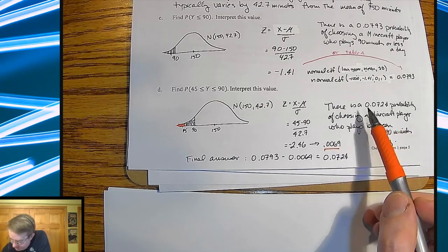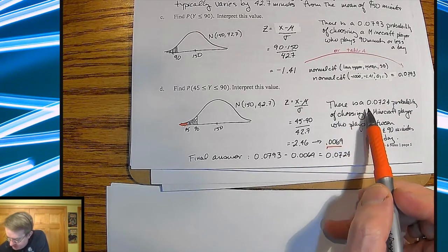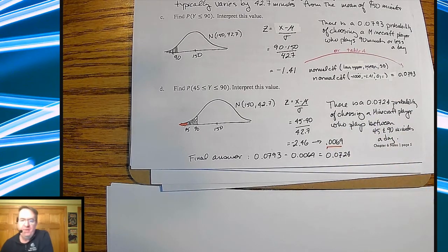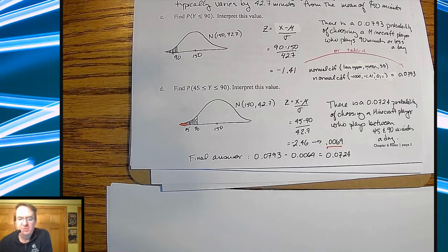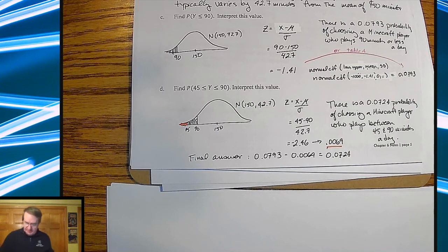So again, you've got, I mean I'm not going to say it's negligible, but the interpretation there is a 0.0724 probability of choosing a Minecraft player who plays between 45 and 90 minutes each day.